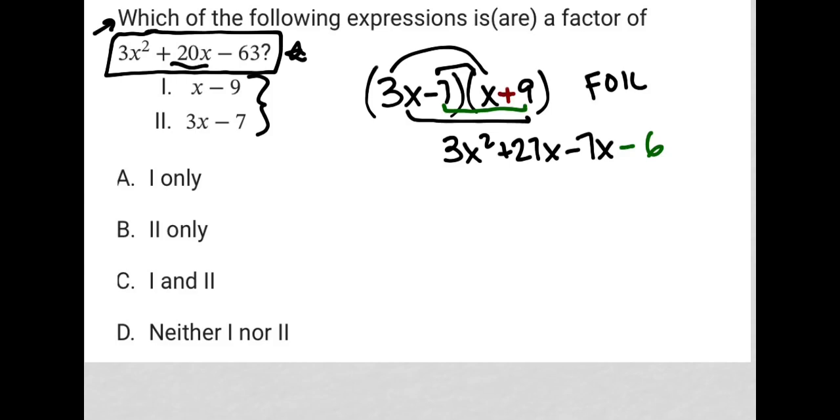So in fact, that does fix it. So I'd have 3x squared plus 20x minus 63, which means that between these two options, only 3x minus 7 is a factor.